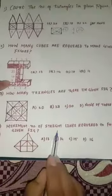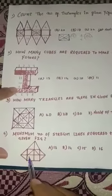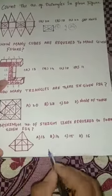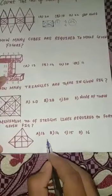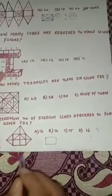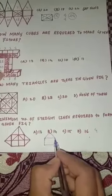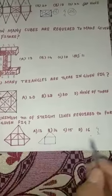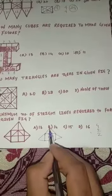The next question asks: what is the minimum number of straight lines required to form the given figure? To construct a cube shape we need 4 straight lines. A triangle normally needs 3 lines, but since we're building on top of the cube, we only need 2 additional lines per triangle. Similarly, 2 more lines are needed on each side.